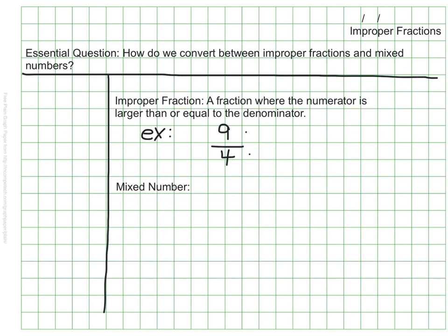A mixed number is a value that is made up of a whole number and a fraction. A mixed number is also larger than one whole. 3 and 1 fourths is an example of a mixed number.